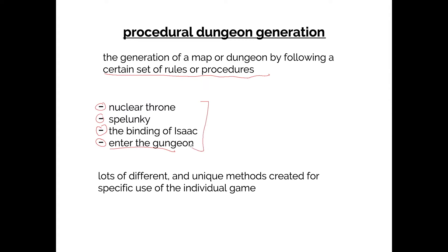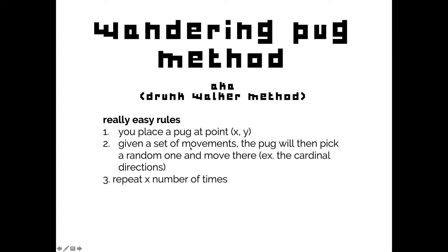The first thing we want to understand about how Binding of Isaac creates their dungeons is the Drunk Walker method. This is a procedural generation algorithm — for today we'll call it the Wandering Pug method, because that's cool. The rule set is extremely easy: you simply place a pug at point X,Y, so let's say (0,0), and give it a move set. For this example we'll use the cardinal directions: north, east, south, and west.